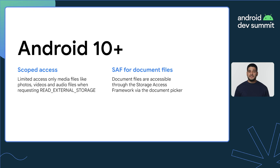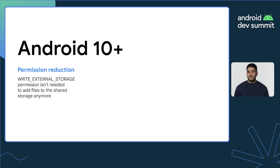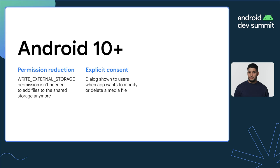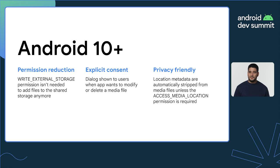Any other files like PDF, zip, or docx, known as document files, are accessible using the document picker, which leverages the storage access framework. The document picker allows the user to retain full control on which document files they give access to. We also introduced other changes to further improve privacy and the developer experience. Location metadata is removed from media files automatically, and to access them, you need to request the access media location permission.